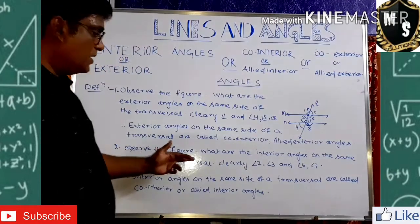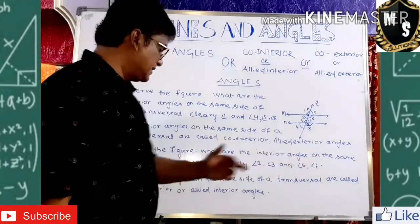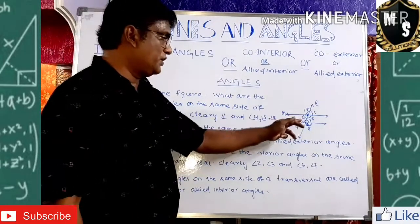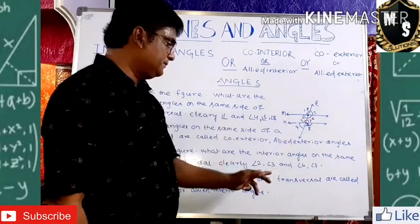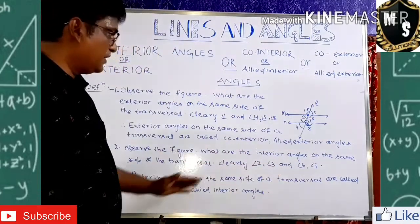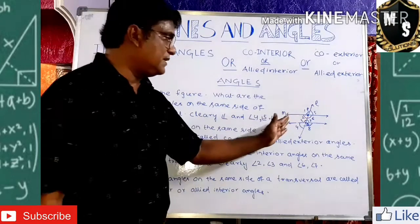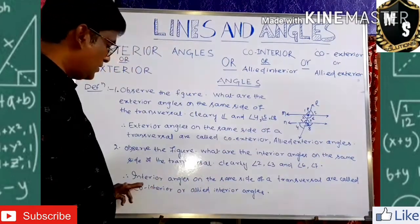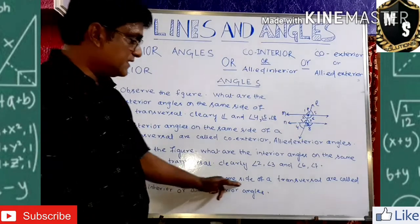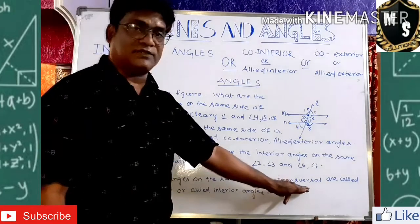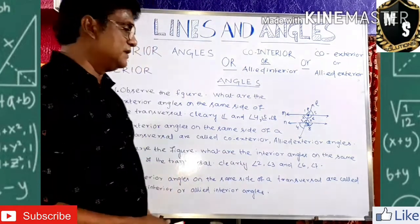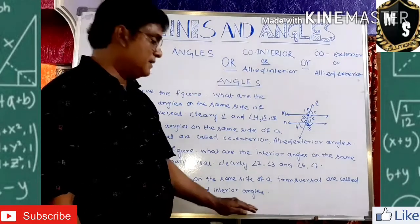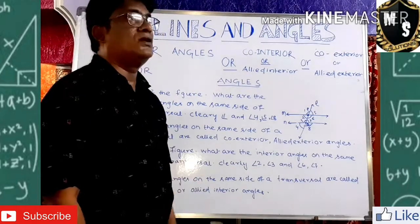Observe the figure: the interior angles on the same side of the transversal are angles 2, 3, 6, and 7. Angles 2 and 3 are on the same side, and angles 6 and 7 are on the same side. So angles 2 and 3 are called co-interior or allied interior angles on the same side of the transversal, and similarly for angles 6 and 7.